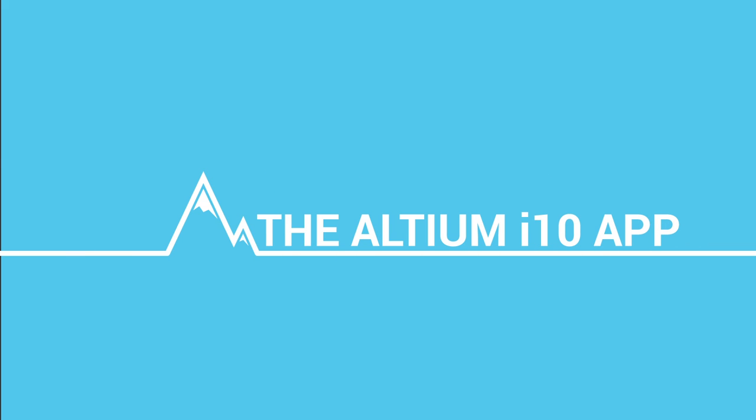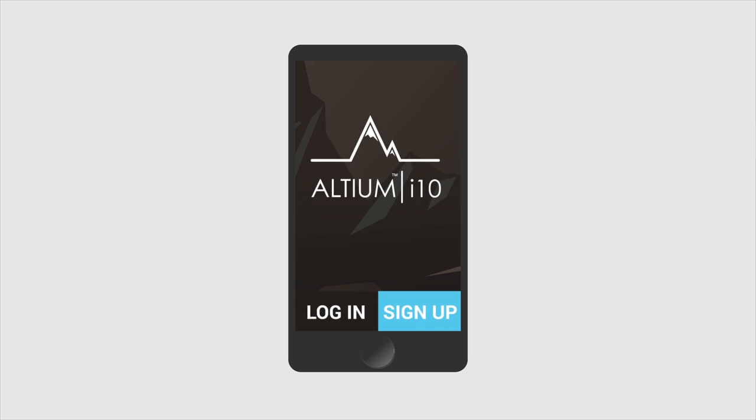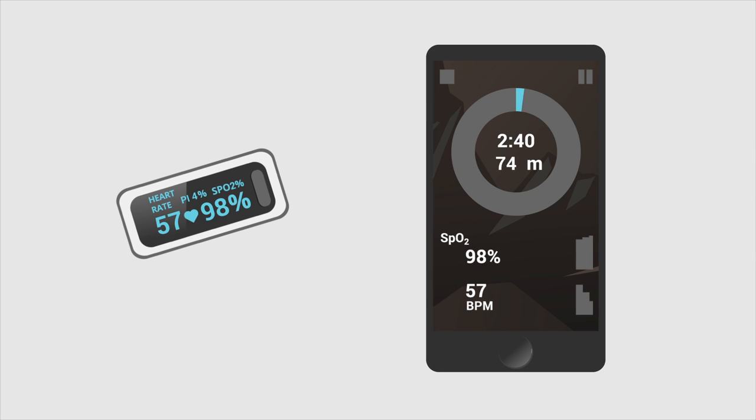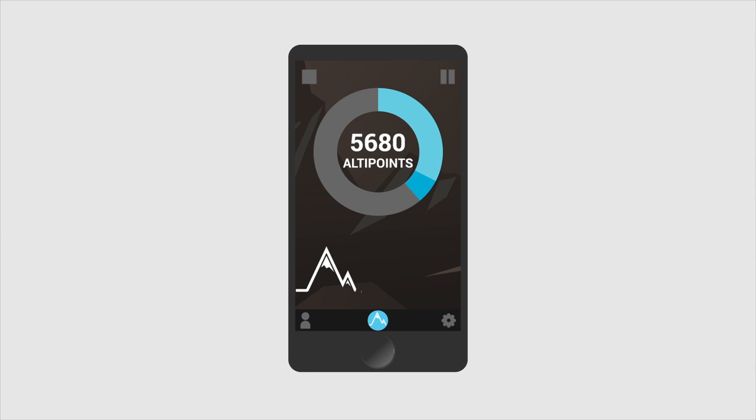The Altium i10 smartphone app can be used when you have found the optimum number of foam discs and your SpO2 drops after one to two minutes. The app connects automatically to the oximeter via bluetooth allowing you to track timing and your simulated altitude and giving you alti points at the end of each one hour session.